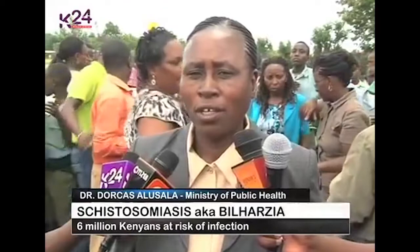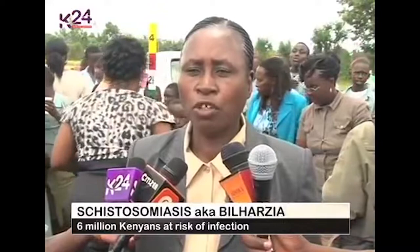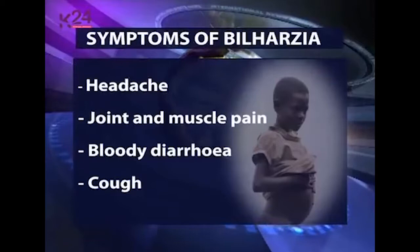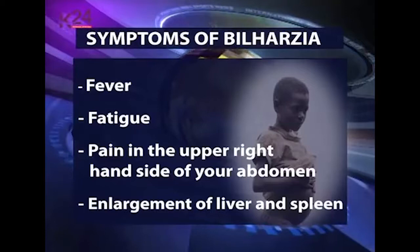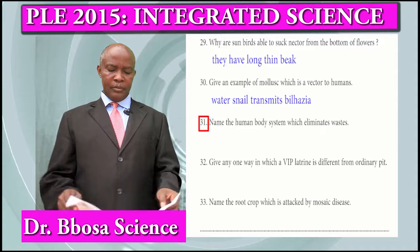Humans contribute to the transmission of bilharzia if they don't use proper waste disposal. The major symptoms of bilharzia include headache, joint and muscle pain, bloody diarrhea, cough, fever, fatigue, pain in the upper right side of the abdomen, and enlargement of the liver and spleen.